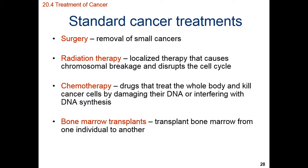Some of the standard treatments we have to treat cancer include cutting the cancer out, known as surgery. These processes generally are going to remove a liberal amount of surrounding tissues to also help minimize the amount of tumor spread or missing a cancer cell.